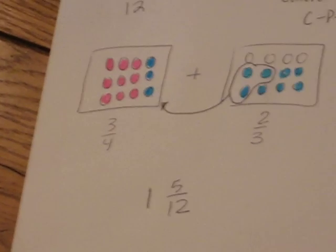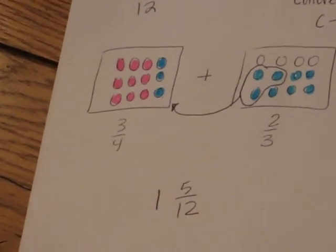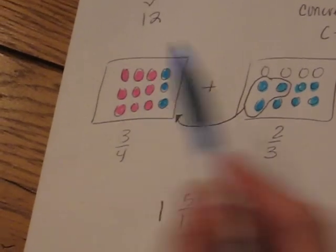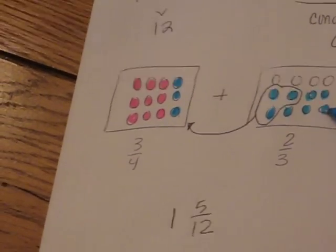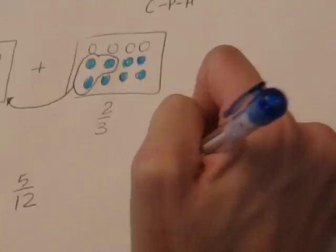Now, if students aren't readily able to combine them by moving them, they can also count them and say, well, this one is three, six, nine, ten, eleven, twelve, thirteen, fourteen, fifteen, sixteen, seventeen, out of what makes the unit twelve.